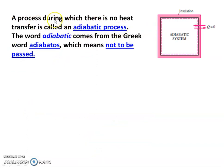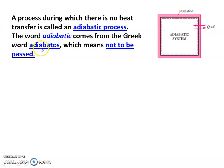Next, adiabatic process. A process during which there is no heat transfer is called an adiabatic process. A system that is completely insulated is called an adiabatic system, so Q equals zero. The word adiabatic comes from the Greek word adiabatos, which means 'not to be passed' — heat is not passed in the adiabatic process.